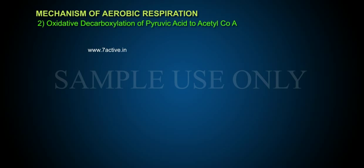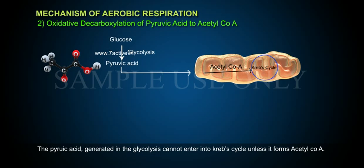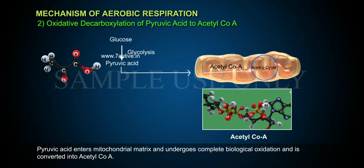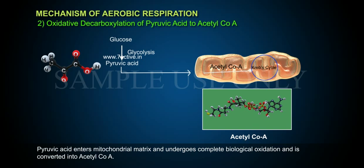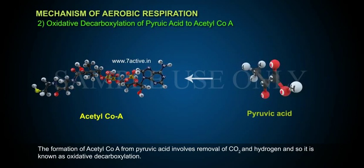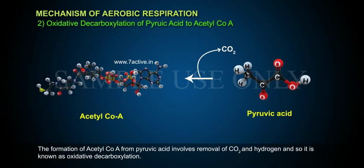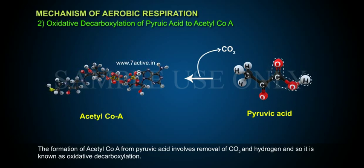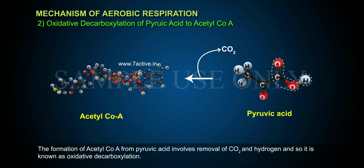Step 2: Oxidative decarboxylation of pyruvic acid to acetyl-CoA. The pyruvic acid generated in glycolysis cannot enter the Krebs cycle unless it forms acetyl-CoA. Pyruvic acid enters the mitochondrial matrix and undergoes complete biological oxidation, being converted into acetyl-CoA. The formation of acetyl-CoA from pyruvic acid involves removal of CO2 and hydrogen, so it is known as oxidative decarboxylation.